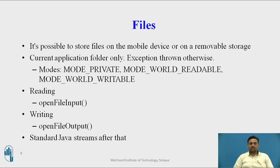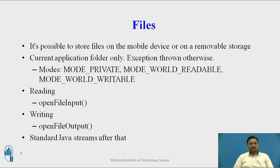The third one is files. In files, there is unstructured type of data. This can be stored internally on the device and at remote storage. Files are generally in three modes: private, world-readable, and world-writable. Two methods are there — openFileInput and openFileOutput — to read and write the files.